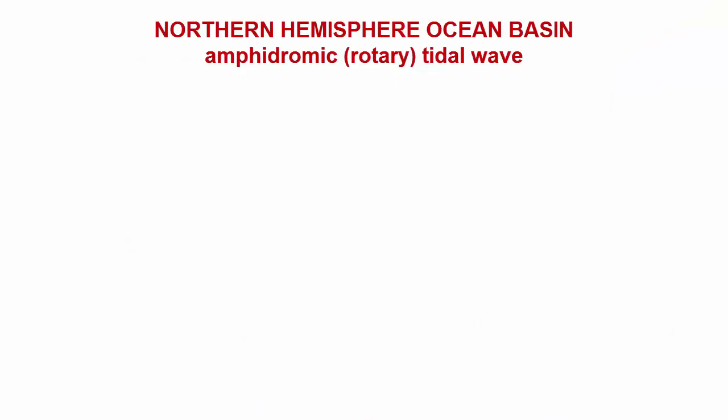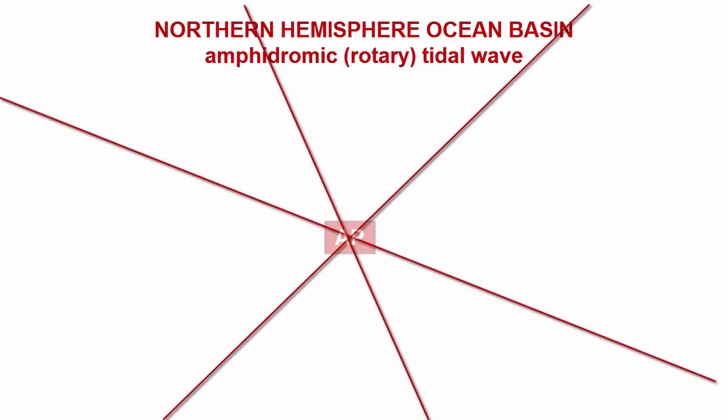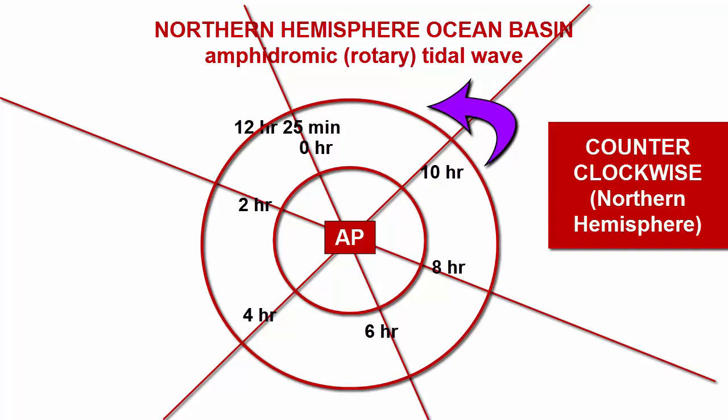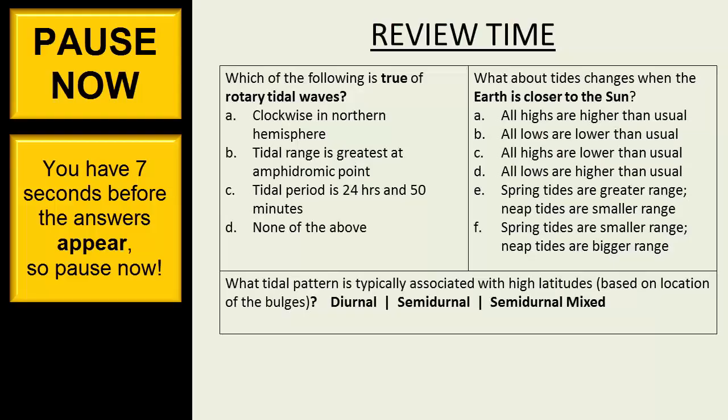Let's piece together again how you would draw an idealized amphidromic system in a square ocean basin in the northern hemisphere. First, you'd start by creating the spokes of your wheel, the cotidal lines, all coming out from the amphidromic point center. Be sure to include enough to get a divisor of 12. Then we can pick a starting point for our wave and demonstrate how it moves counterclockwise, in this case jumping two hours for each spoke until we get back where we started 12 hours and 25 minutes later. Next, we add the co-range lines as concentric circles, and we label them with increasing tidal ranges as we move outward from the amphidromic point.